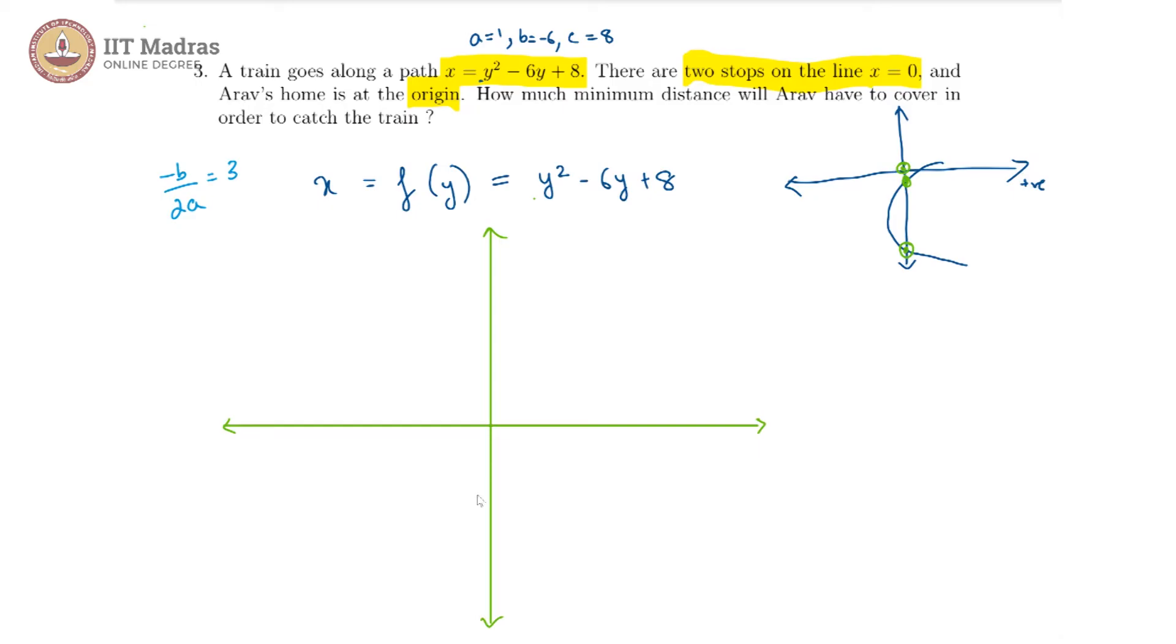Here we are basically saying y is equal to 3 is the vertex. This is 1, this is 2, then this is our y is equal to 3 and thus the vertex will be along the line y is equal to 3, the axis of symmetry is y is equal to 3.